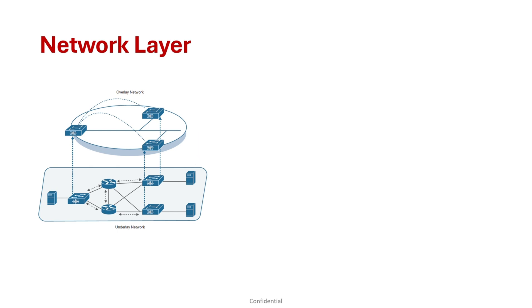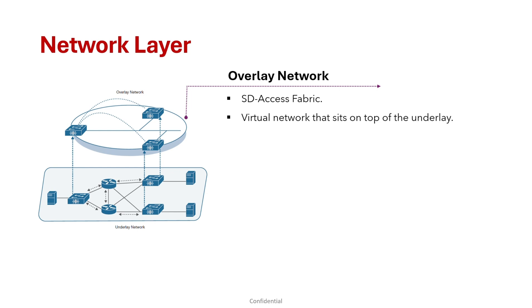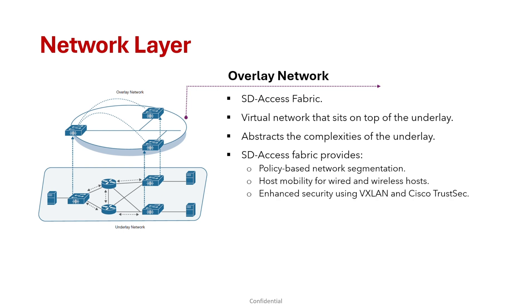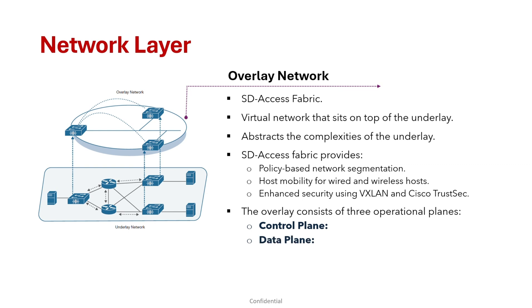The overlay network, also called the SD Access fabric, is a virtual network on top of the underlay. It abstracts the complexities of the underlay and connects all devices in the SD Access architecture. The SD Access fabric provides features such as policy-based networking, segmentation, host mobility for wired and wireless hosts, and enhanced security using VXLAN and Cisco TrustSec. The overlay consists of three operational planes: the control plane, data plane, and policy plane.